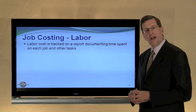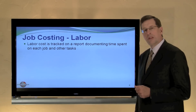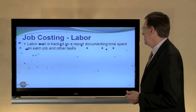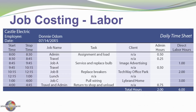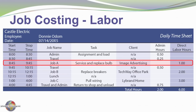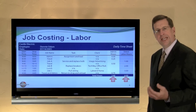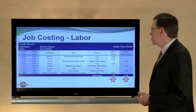We need to track the three cost components: labor, materials, and overhead. Labor cost is tracked on a report documenting the time spent on each job — a daily timesheet. For July 14th, Donny's timesheet shows start and stop times, the job name, tasks, and client. Job A: Donny was there from 8:45 to 9:45, one hour spent servicing and replacing the bulb. Six hours of Donny's time was attributable to direct labor and two hours to administrative overhead. This timesheet feeds into our job cost sheet.